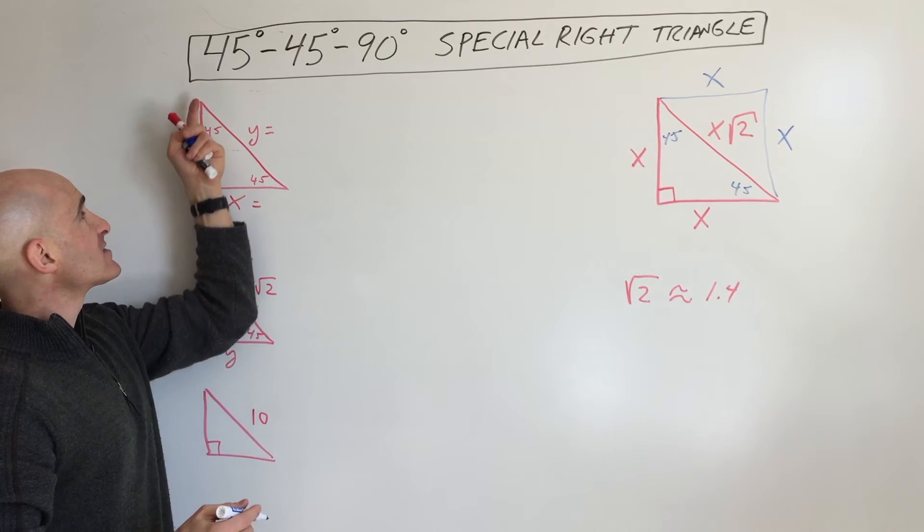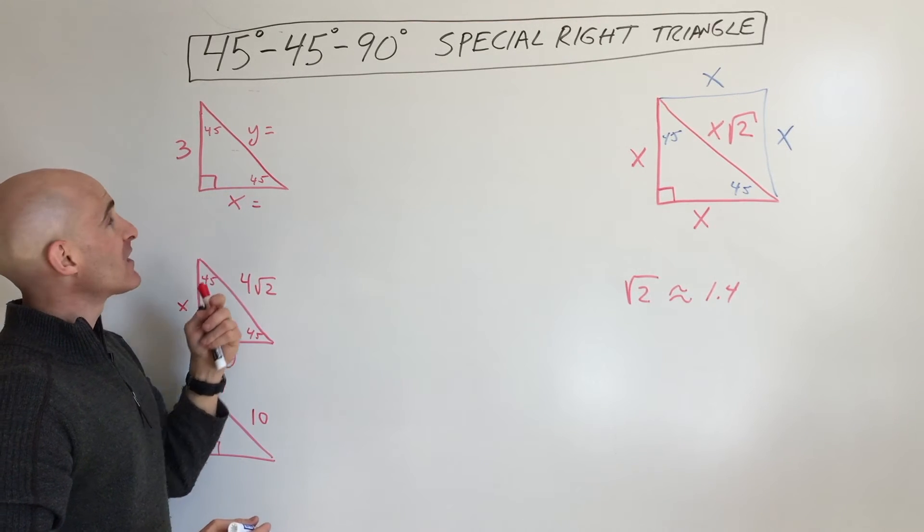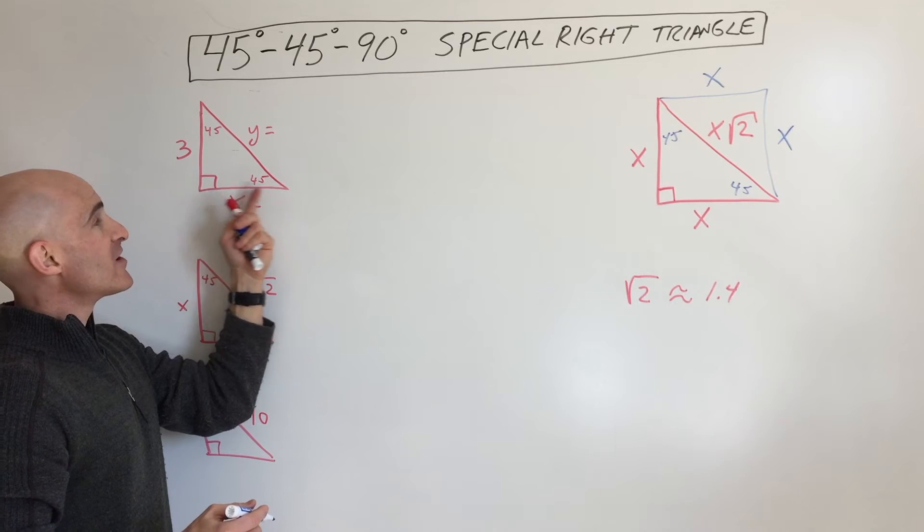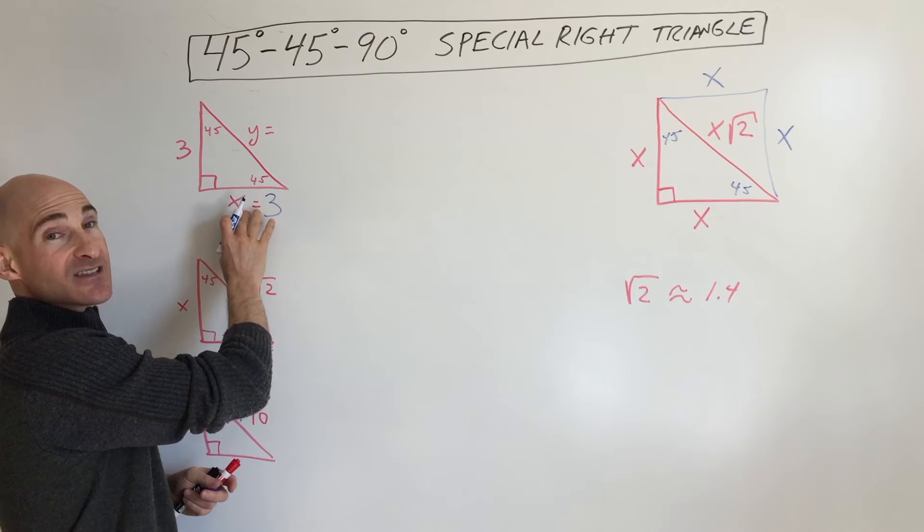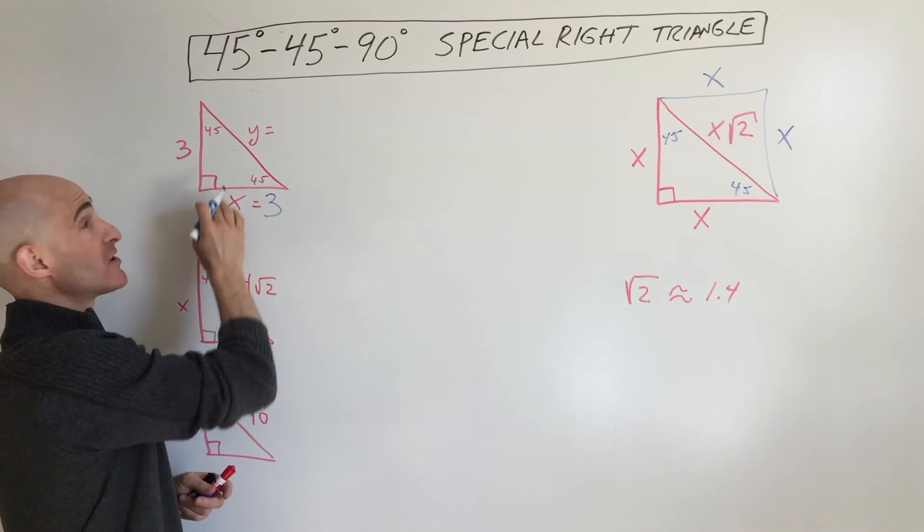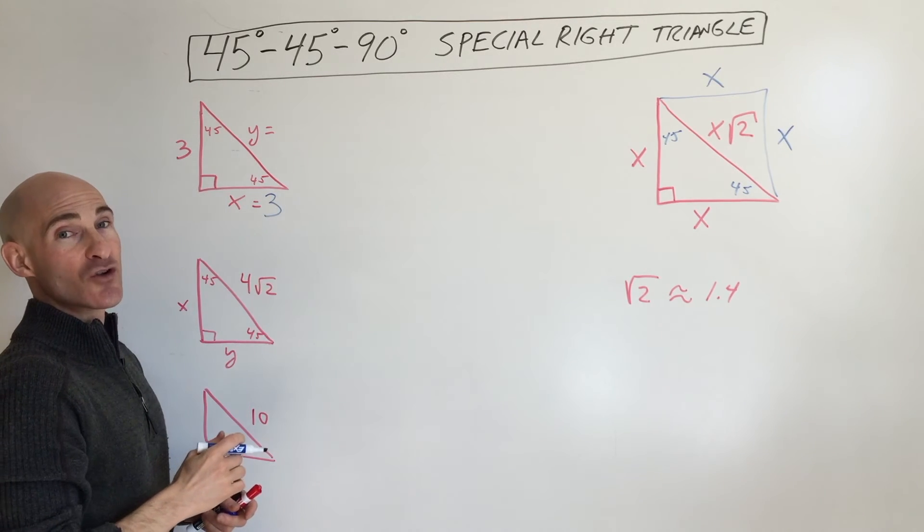Say this one over here, they give us the leg length is 3. So what would be this side length right here? Well, it'll also be 3 because this is an isosceles triangle. The base angles are congruent, so these legs are going to be congruent.